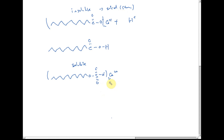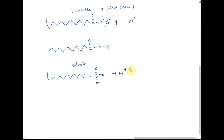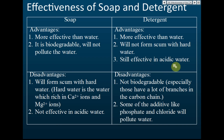Detergent can also be used with acidic water. This is because detergent is derived from a strong acid, which ionizes 100%. So the hydrogen ions will not attach to the sulfate group here. The sulfate ion remains intact, meaning the hydrophilic part is preserved, and the detergent remains effective in acidic water.